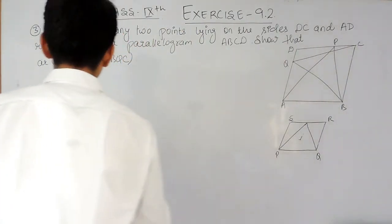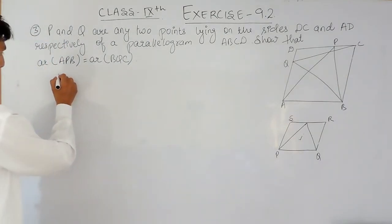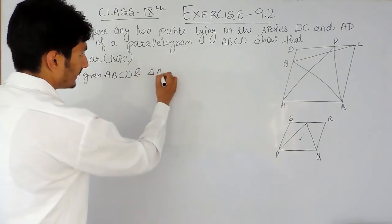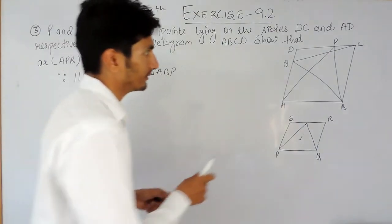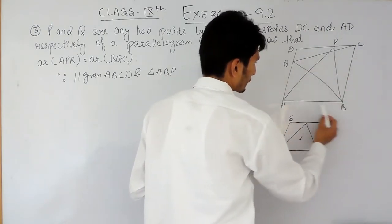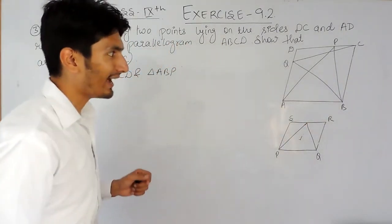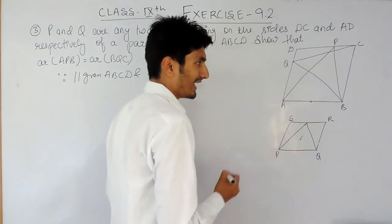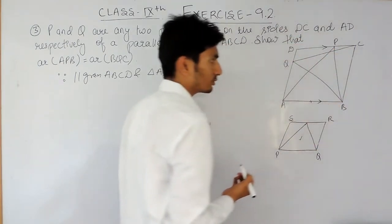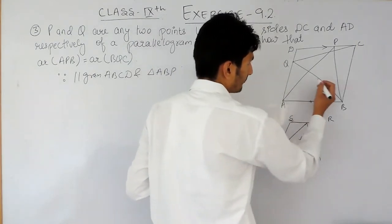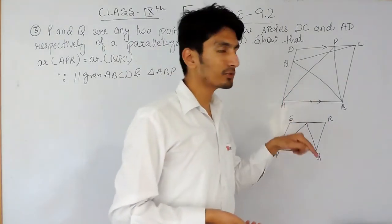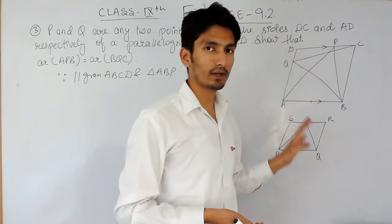First, let's consider parallelogram ABCD and triangle ABP. Both figures lie on the same base, that is AB, and they are between the same parallels — because in a parallelogram the opposite sides are parallel, so this triangle and this parallelogram lie on the same base and between the same parallels.